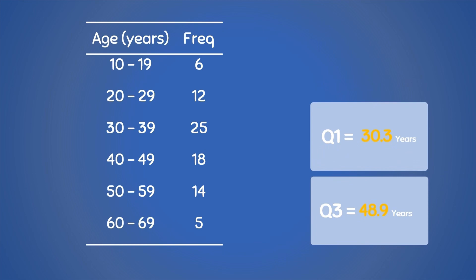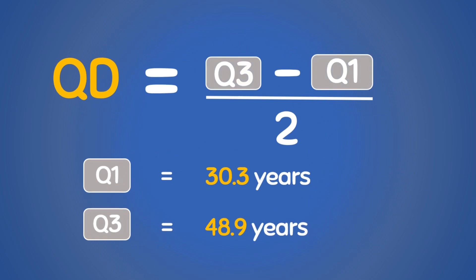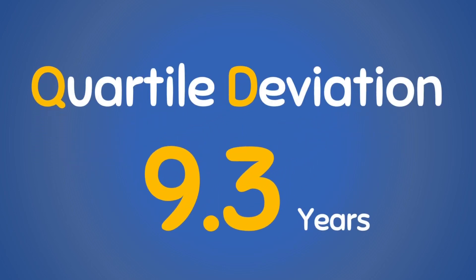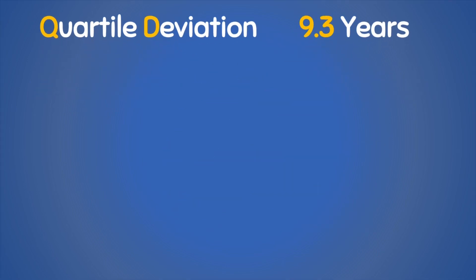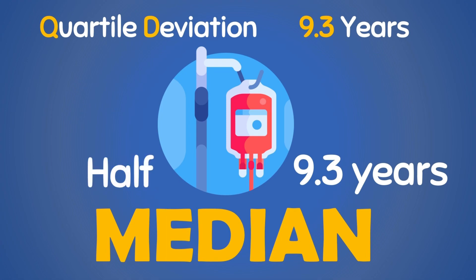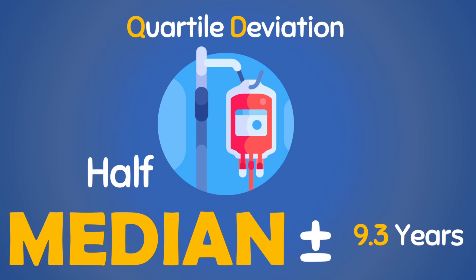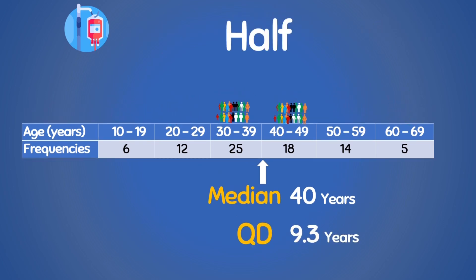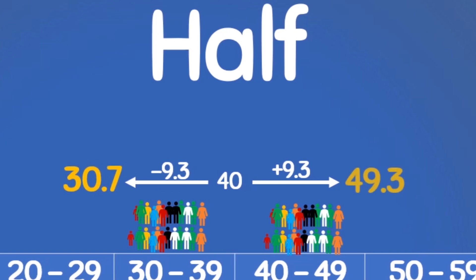Now let's find the quartile deviation. QD equals Q3 minus Q1 divided by 2 = (48.9 − 30.3) / 2 = 9.3 years. This simply means that 50% of the patients admitted to the hospital have ages within 9.3 years of the median. In other words, if our median was 40 years, then half of our patients were between 40 minus 9.3 and 40 plus 9.3, which is 30.7 years to 49.3 years.